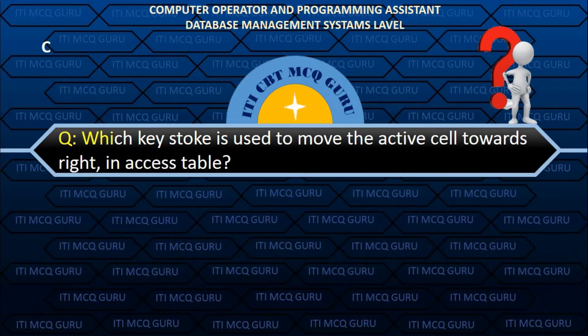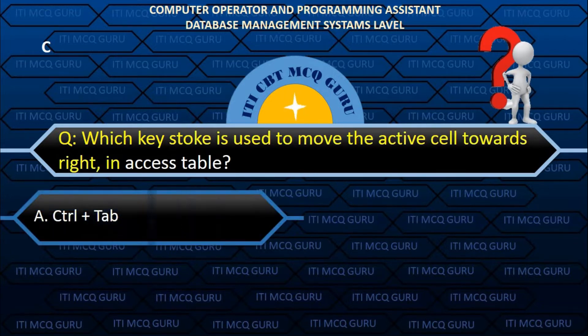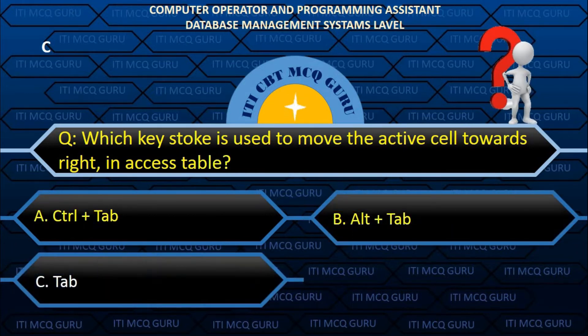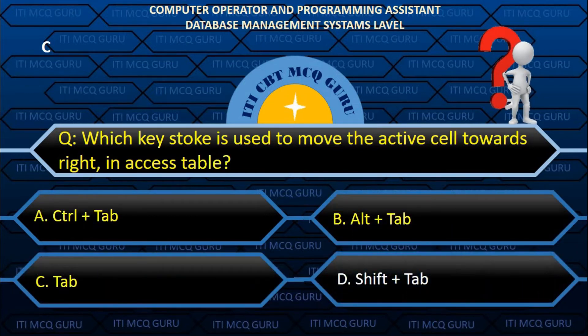Which key is used to move the active cell towards the right in an Access table? C. Tab.